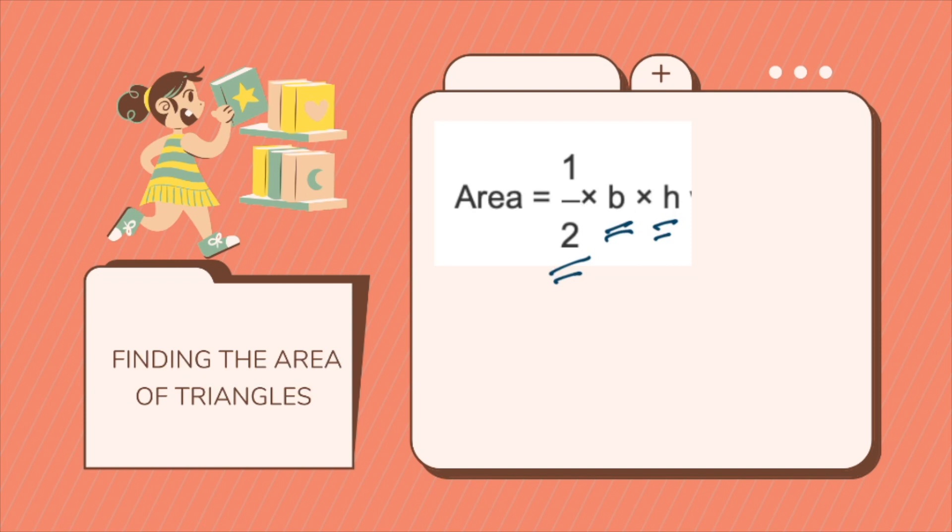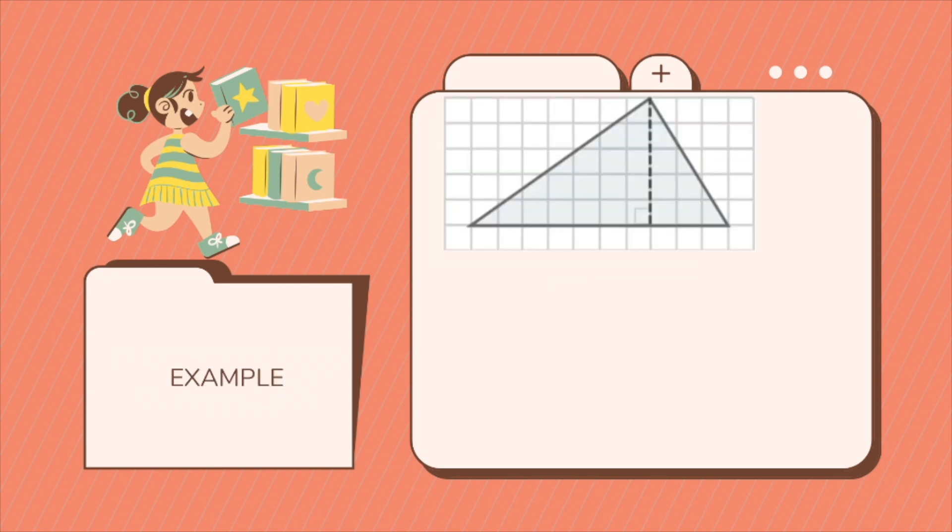Your base, of course, can be your length or your width, and your height will be the vertical length or the vertical width. Now, let's say, for example, we have this triangle where we will solve this as these are units, one unit per box or per line.